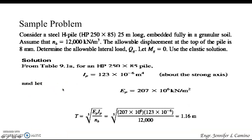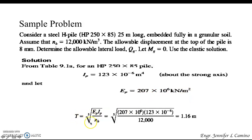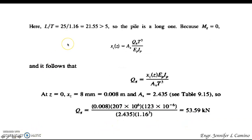Sample problem: consider a steel H-pile with a given cross-section, 25 meters long, fully embedded in granular soil. Assume n_H = 12,000 kN/m³ and allowable displacement at the top is 8 mm. Determine the allowable lateral load Q_g with M_g = 0, using the elastic solution. From table 9.1a, I_p = 123 × 10⁻⁶ m⁴ about the strong axis. T equals the fifth root of (E_p × I_p / n_H).